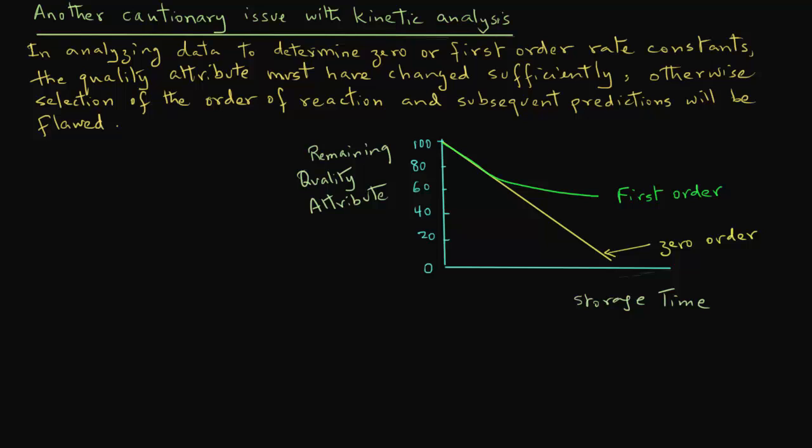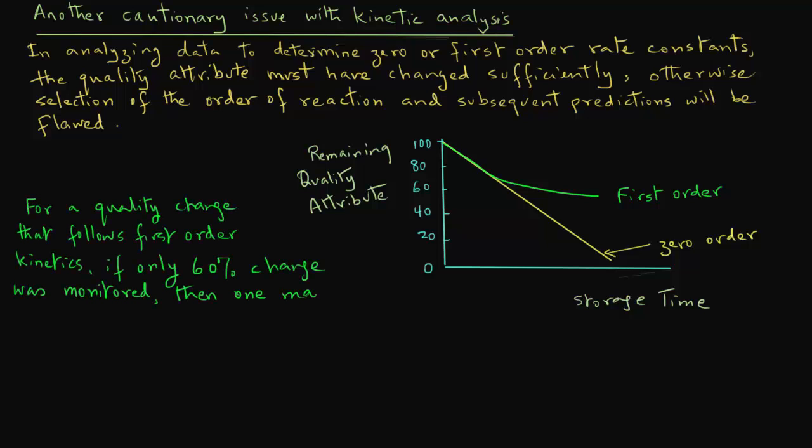Looking at the numbers, for a quality change that follows first order kinetics, if only 60% of the change was monitored, then when you plot the data, you may wrongfully conclude that it is zero order kinetics. Note that after the 60% change, the two curves are diverging.